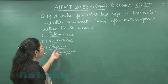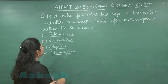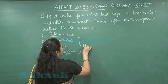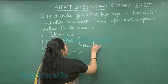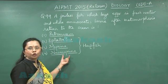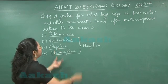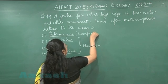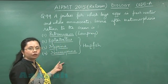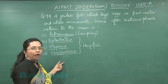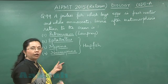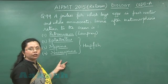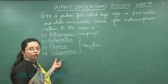In this case all four options are jawless fish — they are cyclostomes. But three of them are hagfish, and hagfish do not show any migration. It is only the lamprey, that is Petromyzon, which migrates from ocean to fresh water, where the adults carry out external fertilization and then die, and after metamorphosis their larvae return to the ocean.